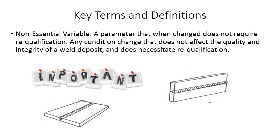Key terms and definitions. For this video we have one definition we're really going to use: non-essential variable — a parameter that when changed does not require requalification. Any condition change that does not affect the quality and integrity of the weld deposit and does not necessitate requalification. So we're talking about something that does not affect the metallurgical quality or the tensile strength.